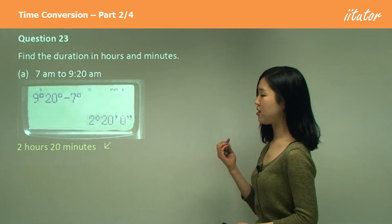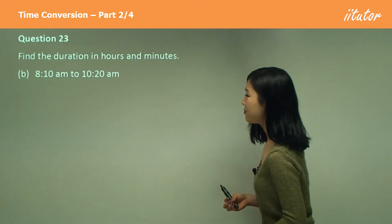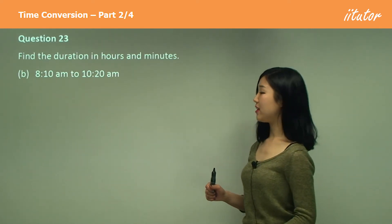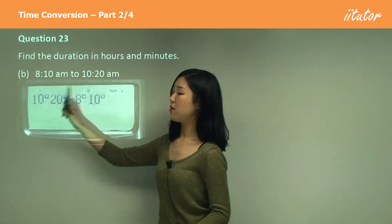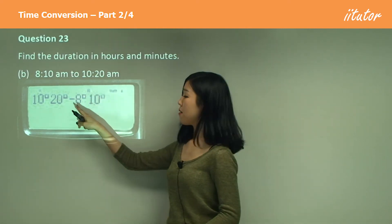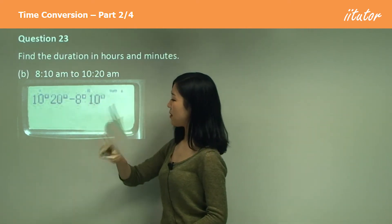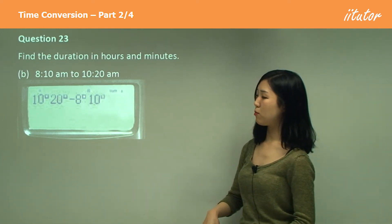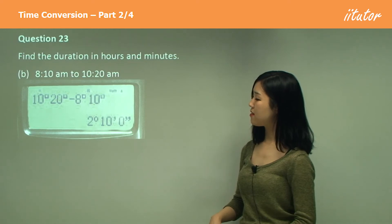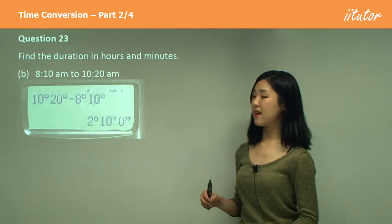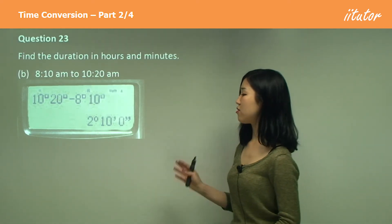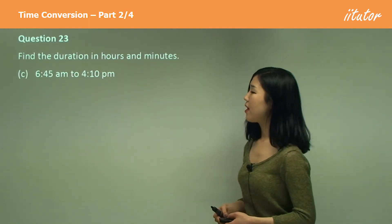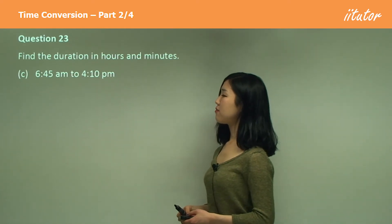Let's try this one: 8:10 to 10:20. We press 10, then the button, then 20, then the button again, minus 8, button, 10, button again. Press Enter, and you should get 2 degrees 10 minutes, which means a duration of 2 hours and 10 minutes.